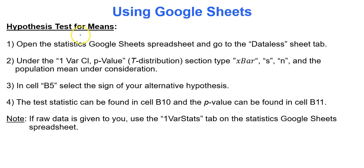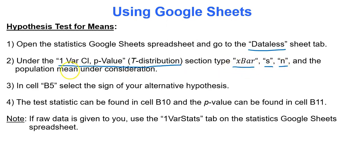To get Google Sheets to do everything for you, type in summary statistics and it gives you the p-value, then draw your conclusion. You'll use the data list tab with the one-variable confidence interval p-value t-distribution region, and type in x-bar, s, n, your population mean under consideration, and the sign of your alternative hypothesis. Unlike a proportion, we have to type in five pieces of information.